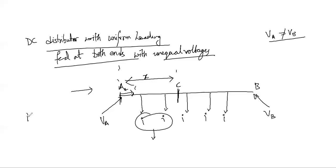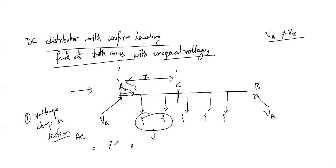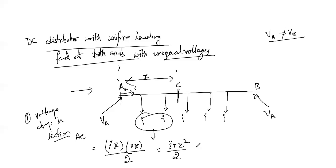So now if I want to calculate the voltage drop in section AC: the current is I·X and the resistance is R·X. So the voltage drop in section AC equals I·R·X² divided by 2. That is the voltage drop of section AC in volts.